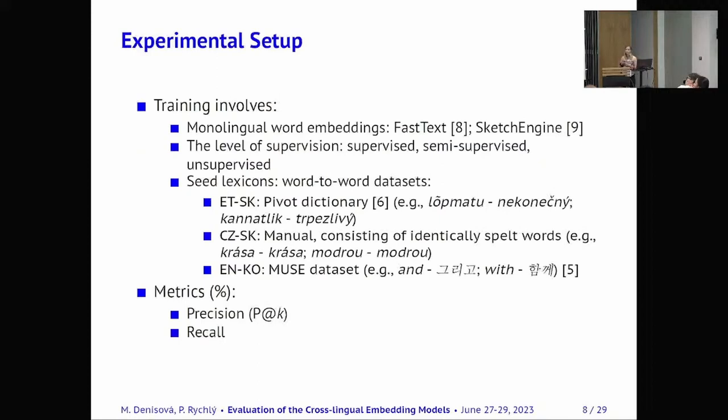So just briefly about the training. So it involves monolingual word embeddings. I used two of them in my training. First was FASTX and second one was from Sketch Engine. This uses the same algorithm but they are trained on different data. And another aspect of the training is the level of supervision. The models can be supervised, semi-supervised or unsupervised.